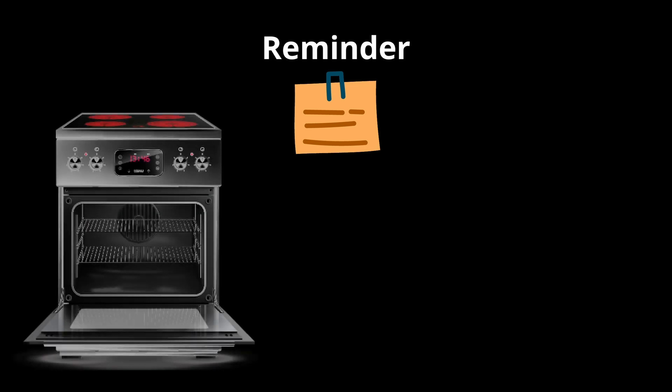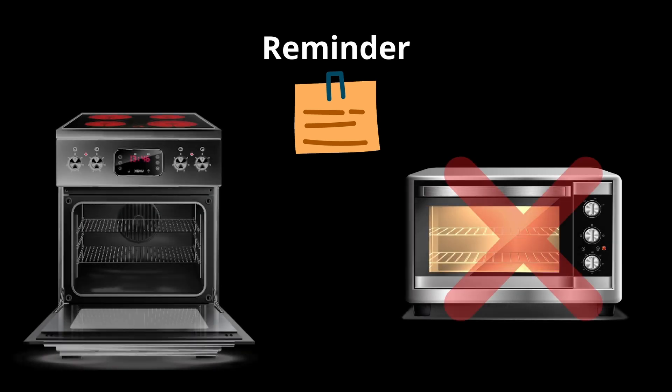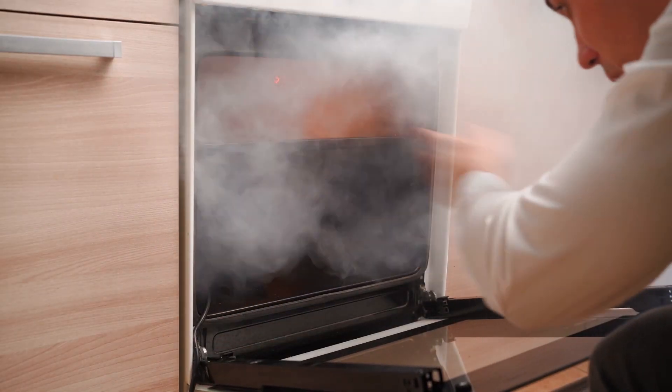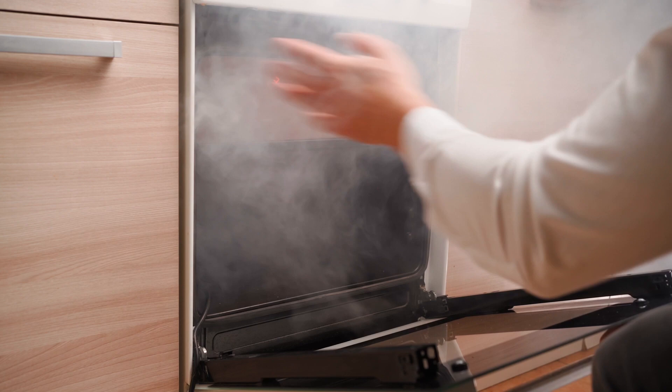A quick reminder before we delve into the science of this: we're discussing traditional, bonafide convection ovens, not microwave ovens. Placing metals, including aluminum, inside a microwave can be risky and is definitely not recommended.